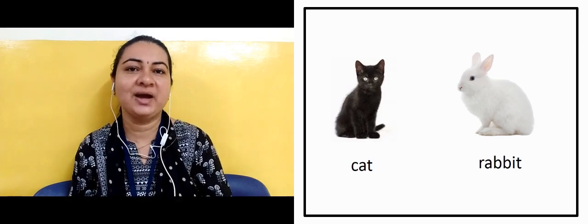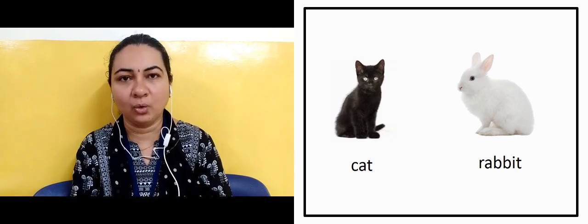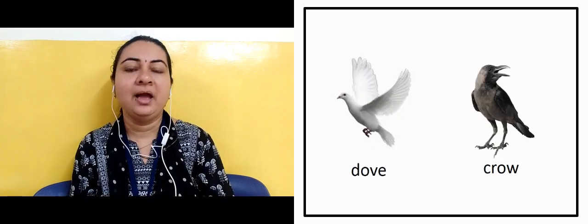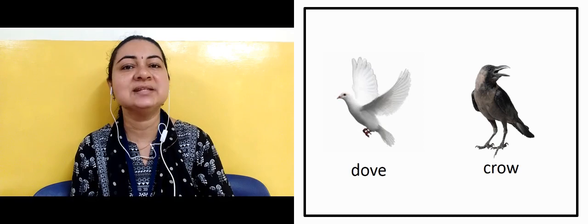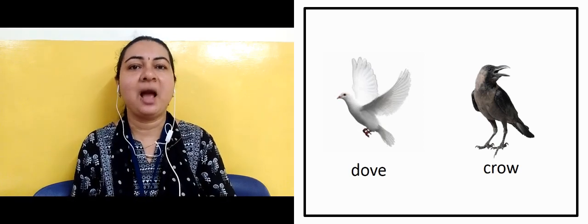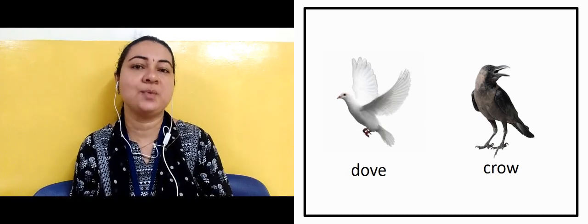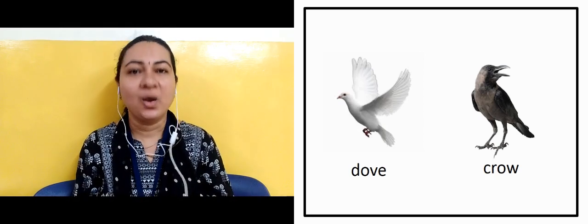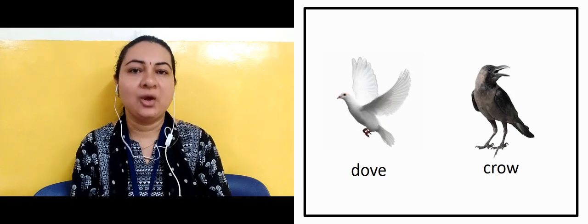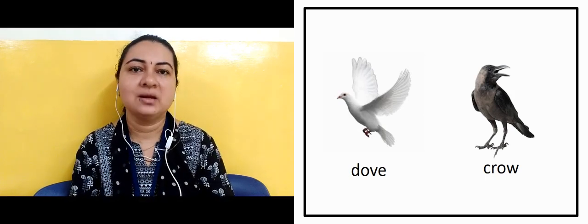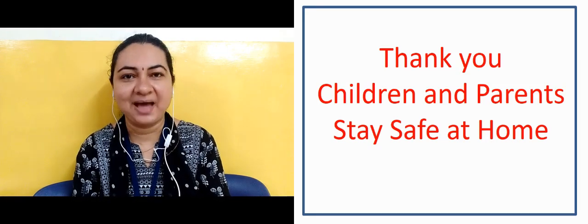The next slide shows two birds — one is dove and crow. What is the color of dove? It is white in color. And crow's color it is black in color. So dear children, you understood color black and white. Thank you so much dear children and parents, stay safe.